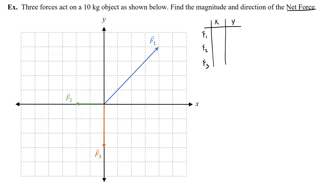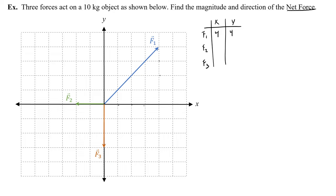F1x has 4 for its x component, and it's going right, so positive. F1y goes up 4, so positive 4 for that component. F2 has only an x component of negative 2, and it doesn't go up or down, so 0 for the y component. F3 has no x component because it doesn't go left or right, and it has a negative 3 y component.